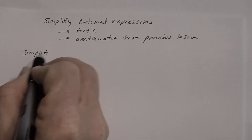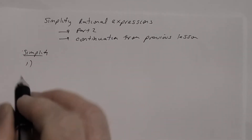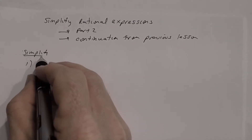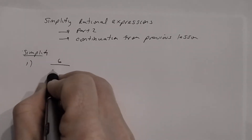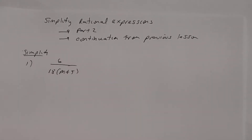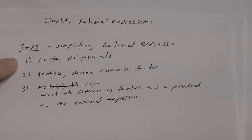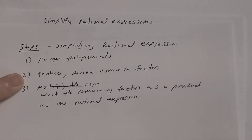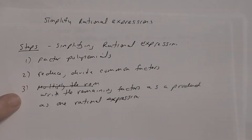We're going to start with a simple example as well. The directions say simplify. For number one, we have 6 divided by 18 times (n + 5). Remember the steps from the previous lesson: factor your polynomials, then reduce and divide out any common factors, then write your answer as one rational expression.